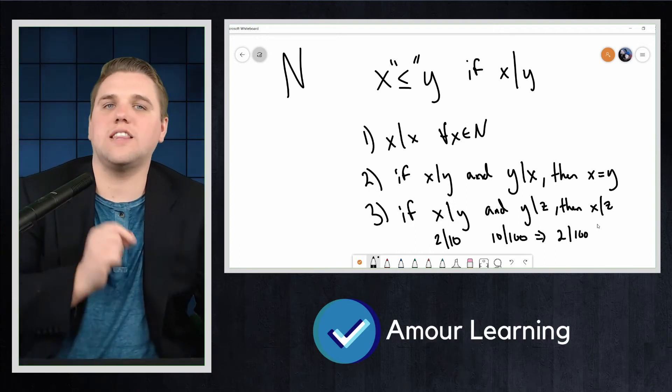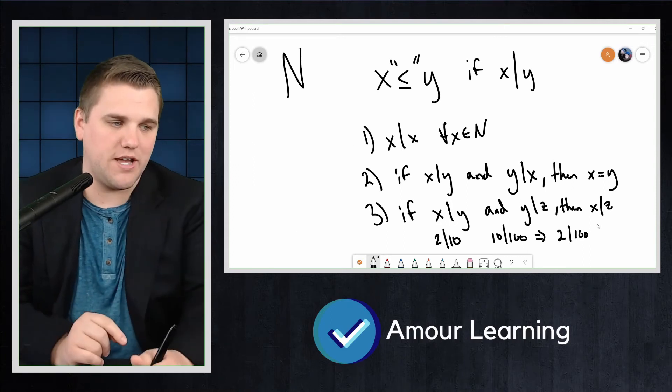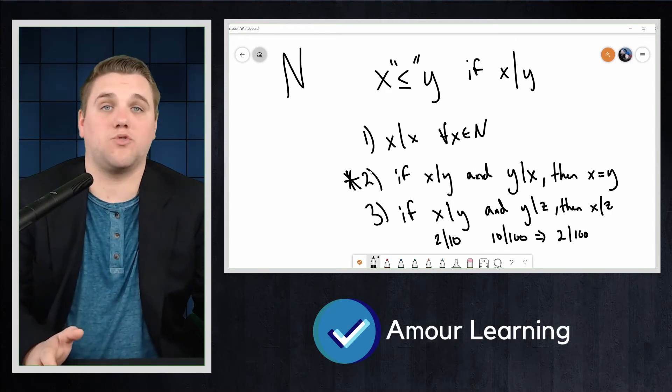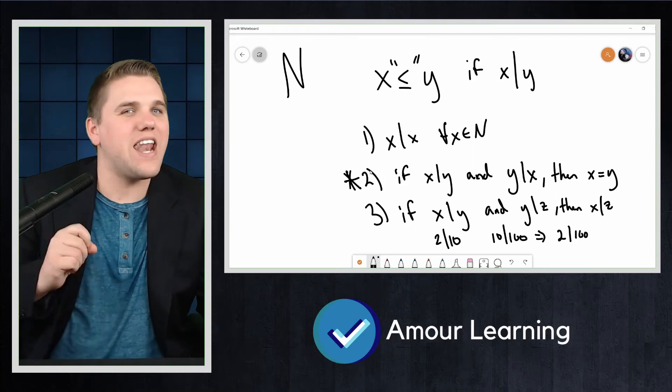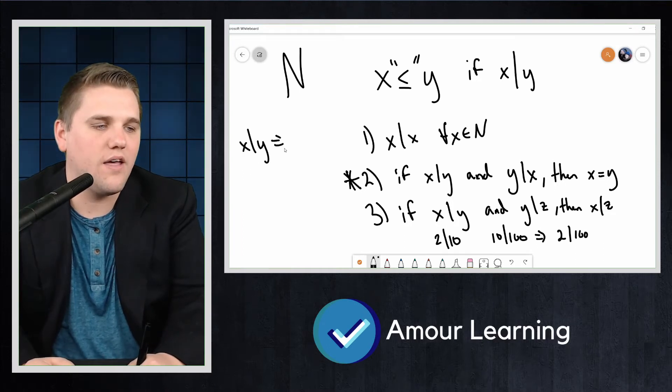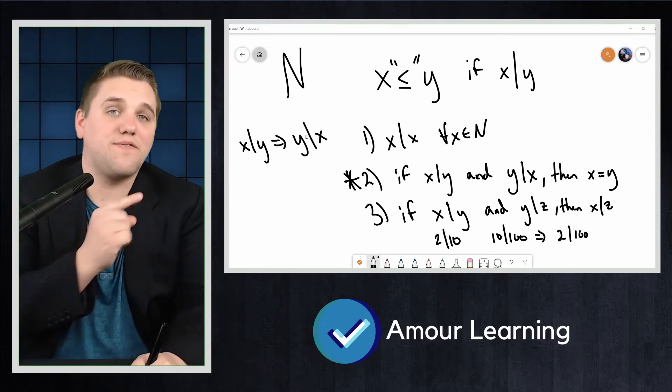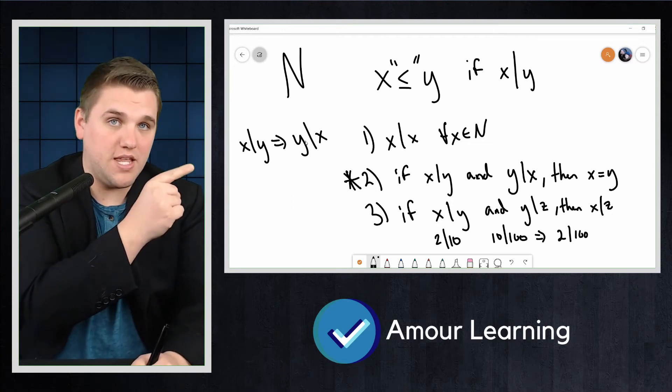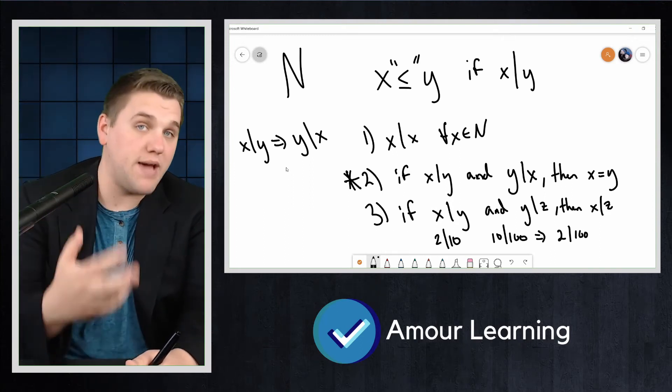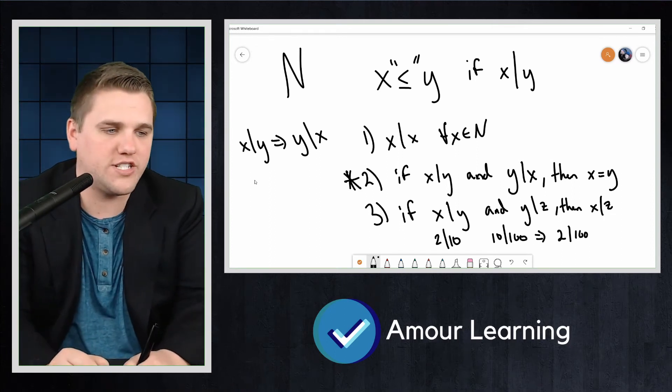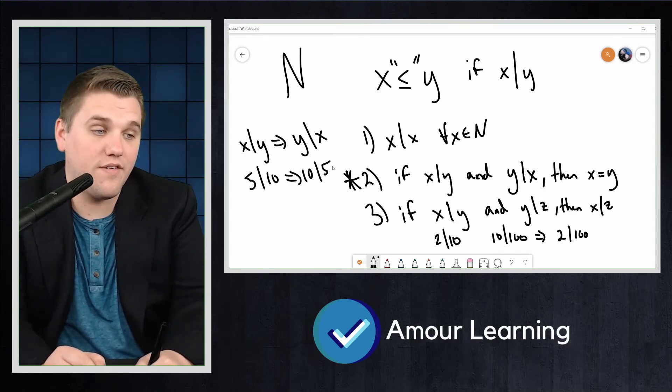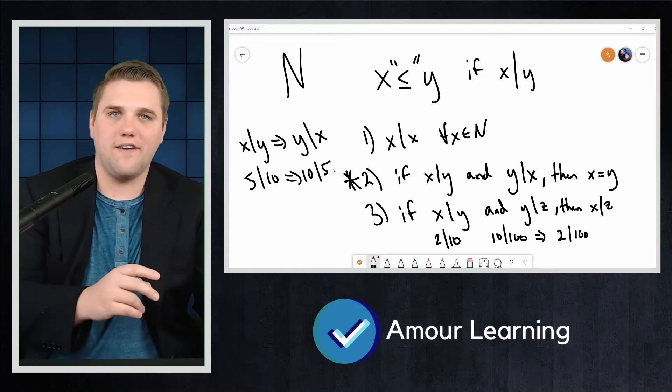So notice that this relation is not symmetric. It's anti-symmetric. And therefore, it's not an equivalence relation because X divides Y does not necessarily mean that Y divides X. The symmetric property was if X divides Y, then Y divides X. If that were true, that would mean that the relation divides is symmetric. But that's not true. That's not always true. For example, 5 divides 10 does not mean that 10 divides 5. 10 does not divide 5. 10 is not a factor of 5.